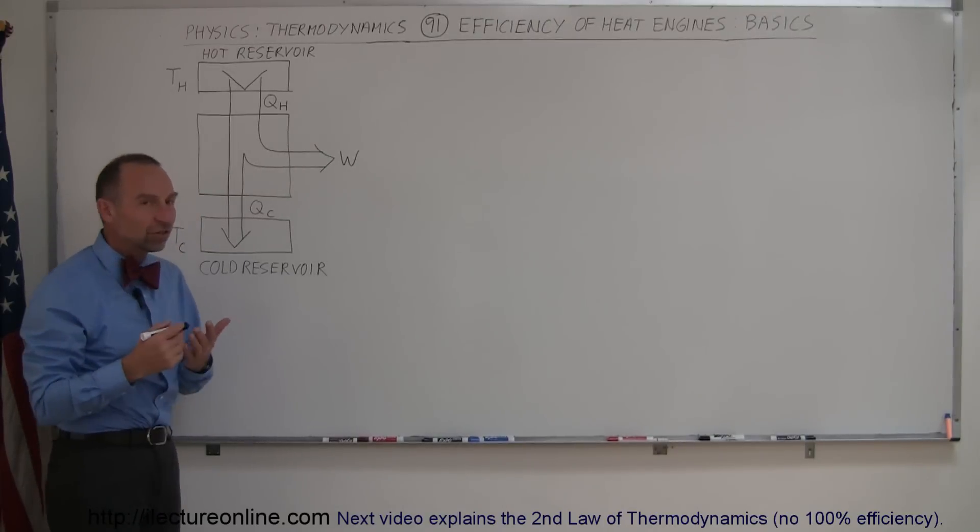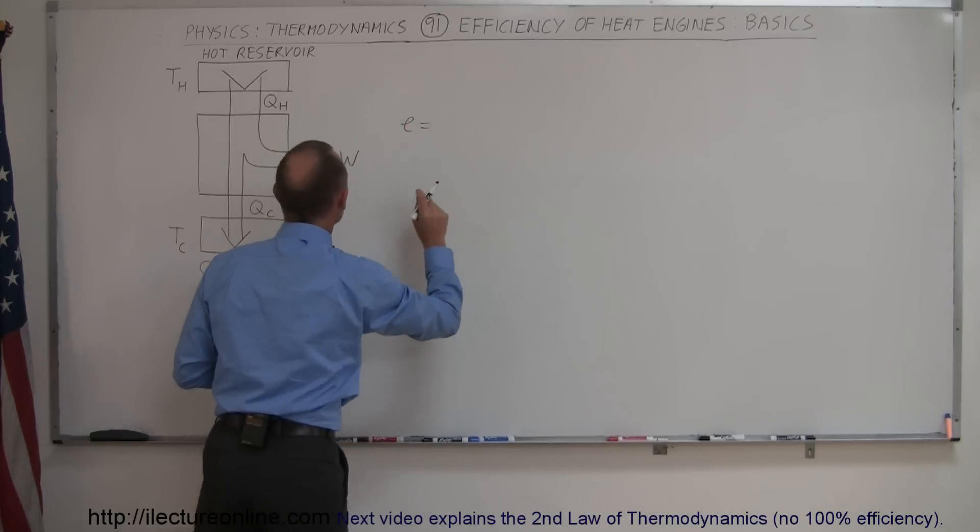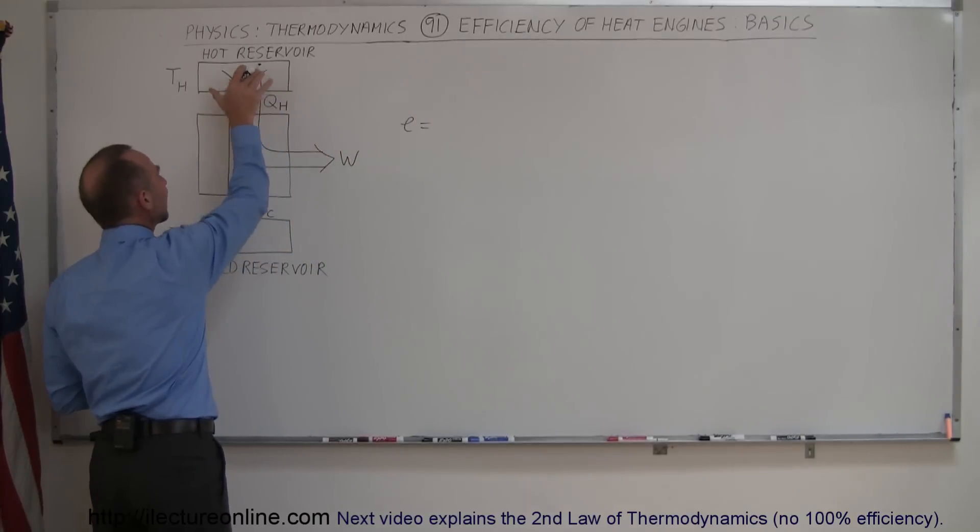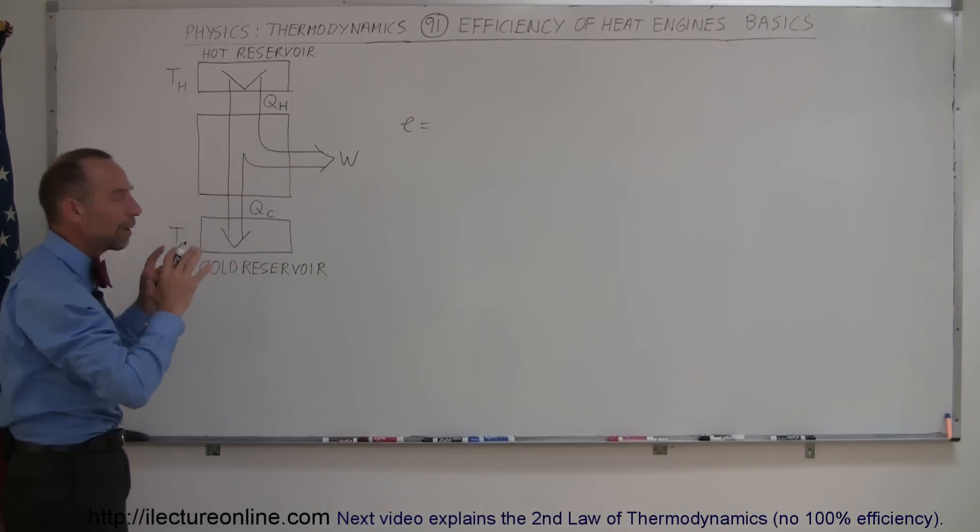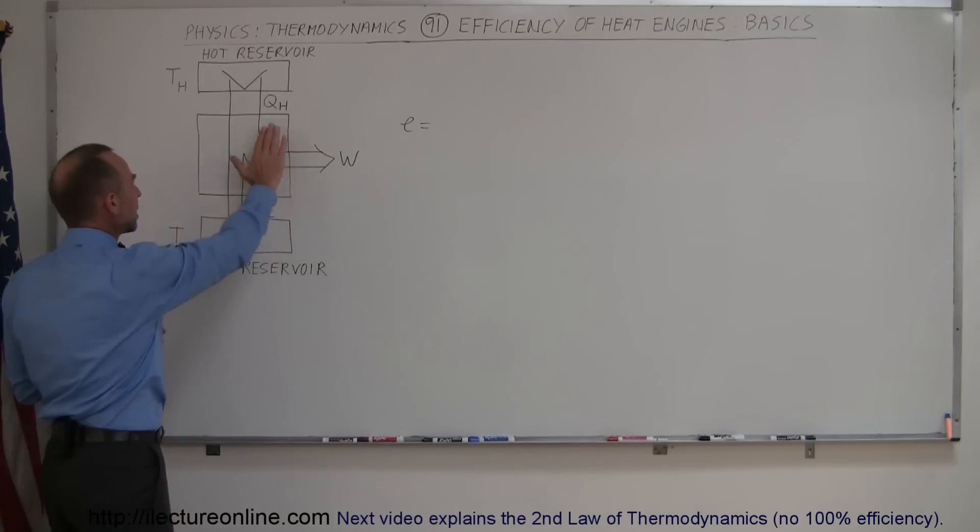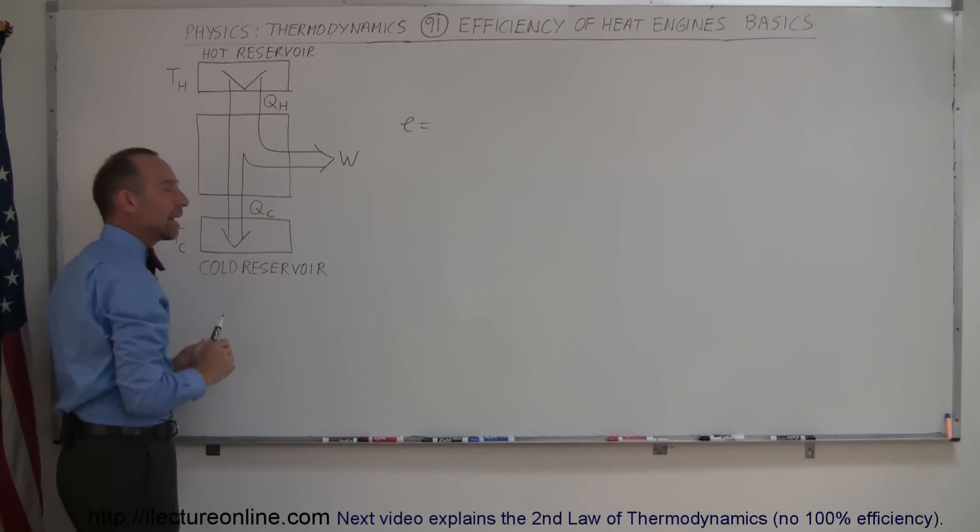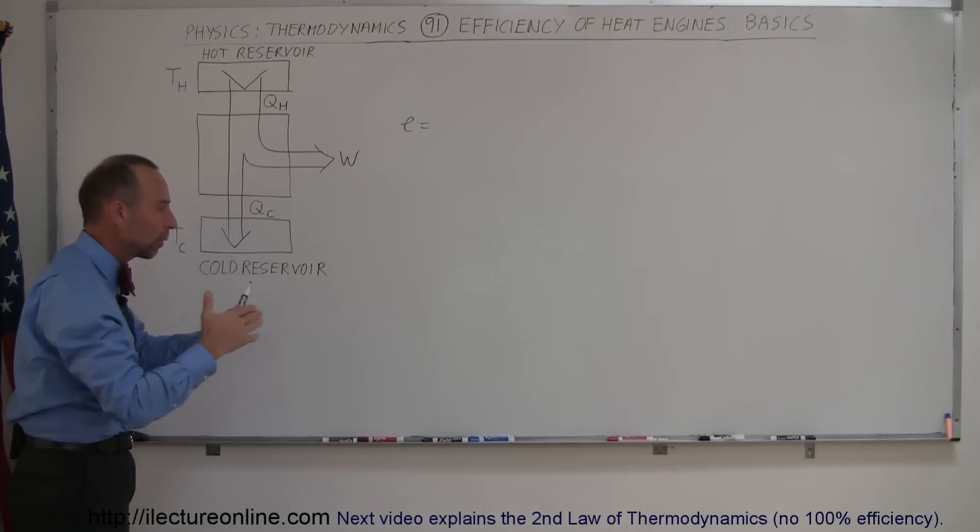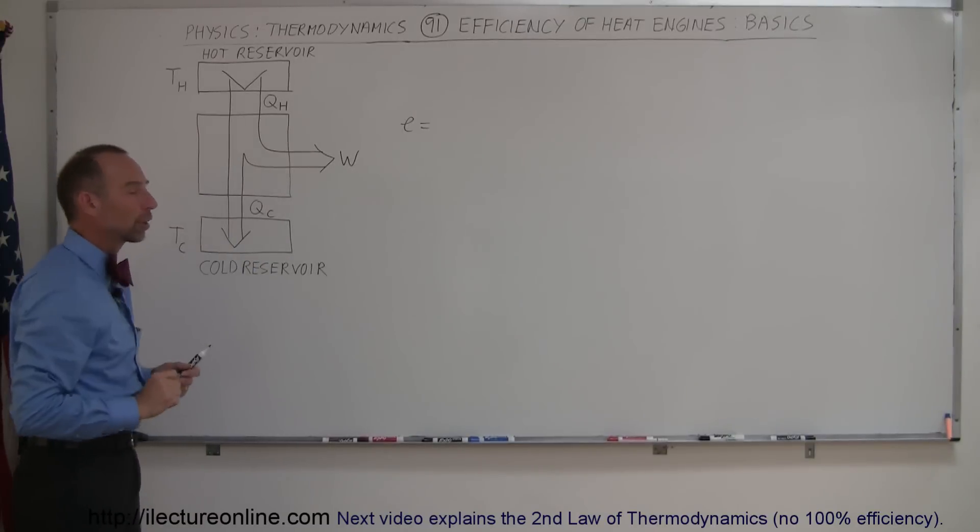And the efficiency of an engine can be defined as the ratio of how much work can be done by the amount of heat that comes out of the hot reservoir. Now, remember, this is simply just a graphical representation of a heat engine. Here's the engine, there's a supply of heat, and there's the exhaust location, the place where we would dump the heat that is not being utilized to do work.